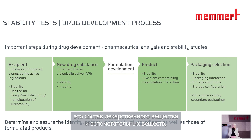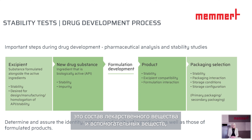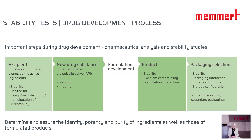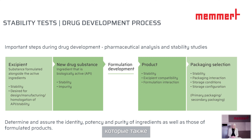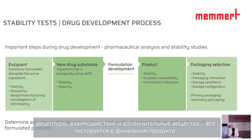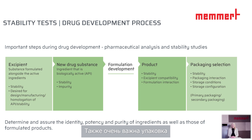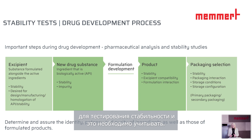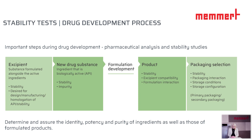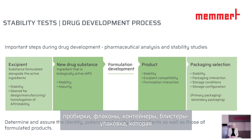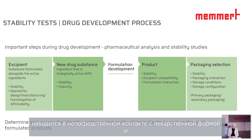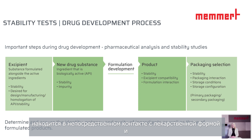Formulation development is the composition of the drug substance and the excipients, and this also has to be tested in regard to stability, excipient compatibility, formulation interaction, and the testing of the finished product. Packaging is also very important for stability testing. Primary packaging — which could be ampoules, vials, containers, or blister packaging — is in direct contact with the dosage form.